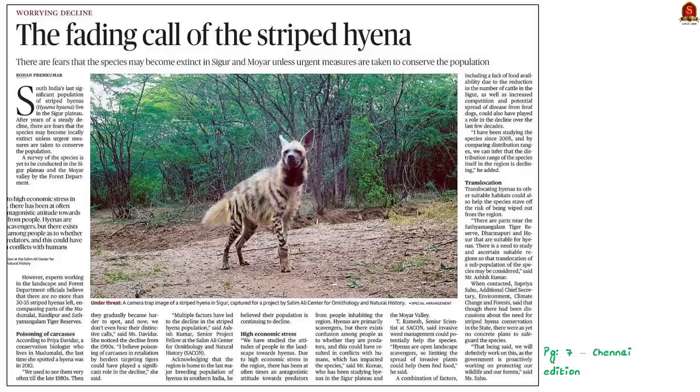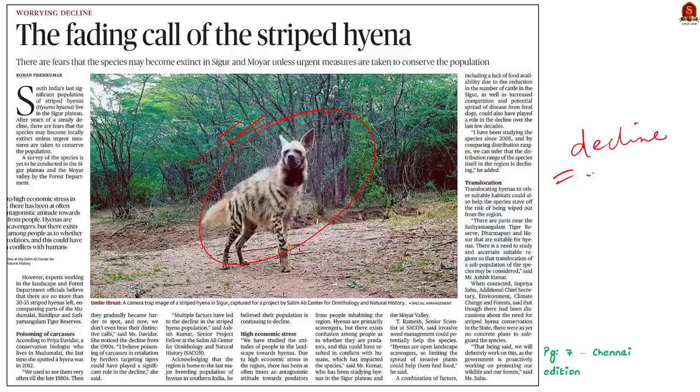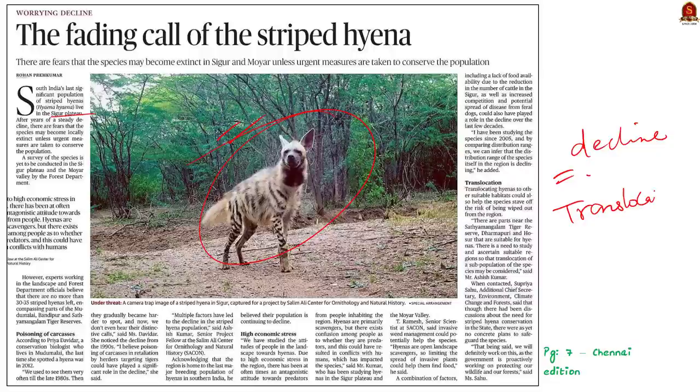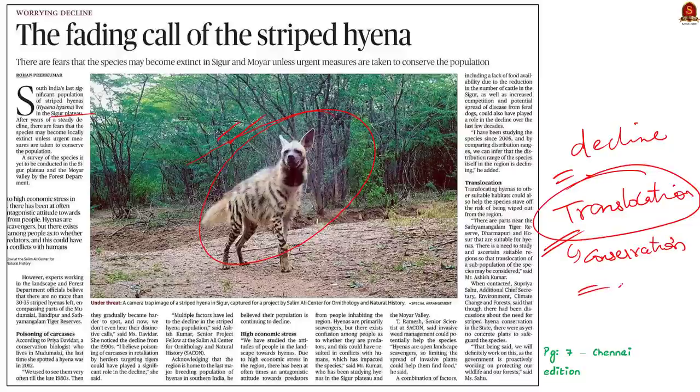With these key learned points, let's move on to next news article discussion. Look at this news article. This news article talks about the striped hyena. This species is undergoing a steady decline. This created a fear that the species may go locally extinct. Hence, urgent measures are to be taken to conserve the population. A survey of the species is yet to be conducted in the Sigur Plateau and the Moyar Valley by the Forest Department. Also, experts suggested translocation of hyenas to other suitable habitats. Translocation is nothing but the deliberate movement of organisms from one site for release in another site. Translocation could help the species stave off the risk of being wiped out from the region. In this context, let us learn about the striped hyenas in prelims perspective.